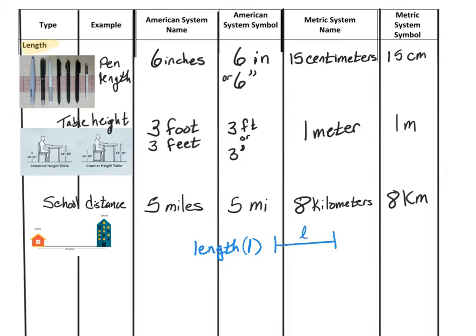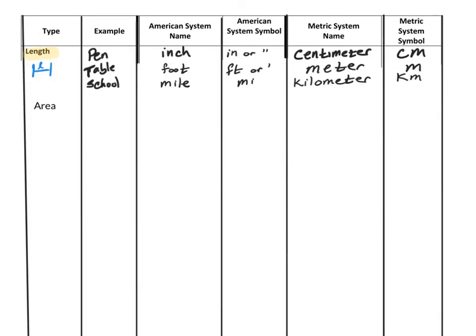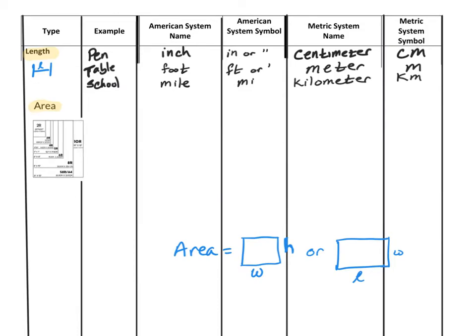Next, let's look at area. Area is measured in two dimensions, the height and the width, or the length and the width. Some examples of when we might use area are to measure the size of a piece of paper or possibly how much carpet you need in your house or how big a piece of land would be.